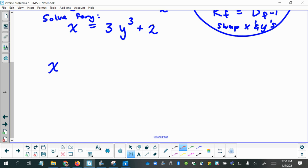Get that red color I wanted. When I subtract 2 from both sides, I'll have x minus 2 on the left. Then I'm going to divide both sides by 3, and I'll bring down what I have so far, y cubed now.